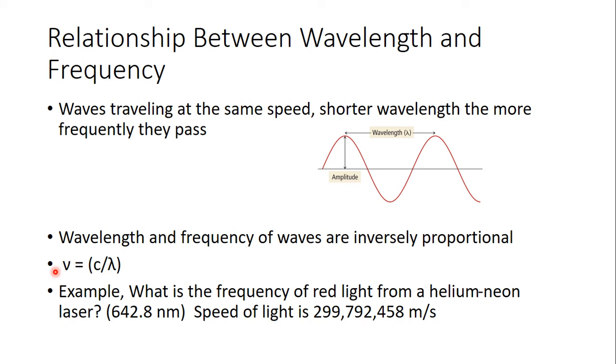Where this V, this V is frequency equals C, speed of light, divided by lambda, which is wavelength. So we're going to use this equation to measure either wavelength or frequency. For example, let's say I have a red laser pointer with a wavelength of 642.8 nanometers. Remember, nanometers is 10 to the minus 9 meters. If I know what the speed of light is, you could calculate the frequency for me. So try and do that.